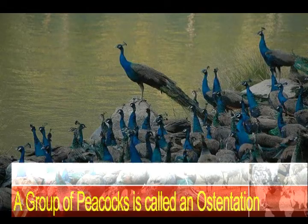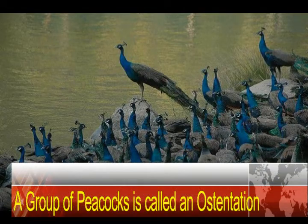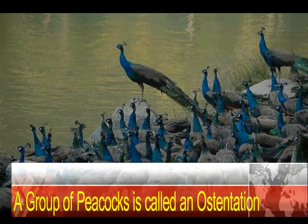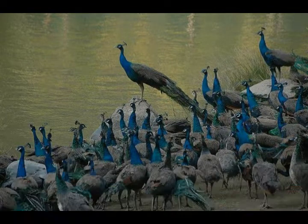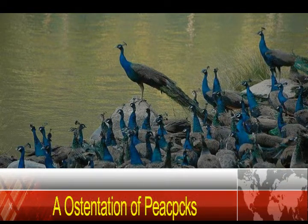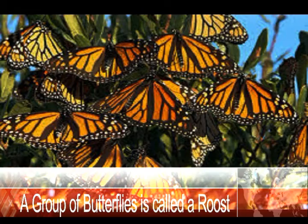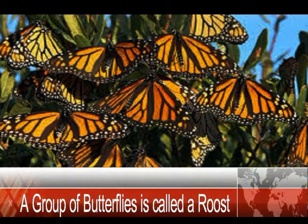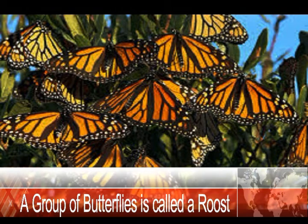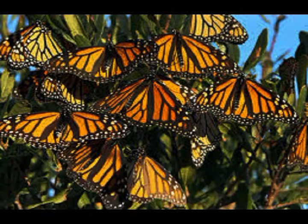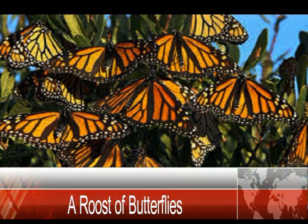A group of peacocks is called an ostentation. An ostentation of peacocks. A group of butterflies is called a roost. A roost of butterflies.